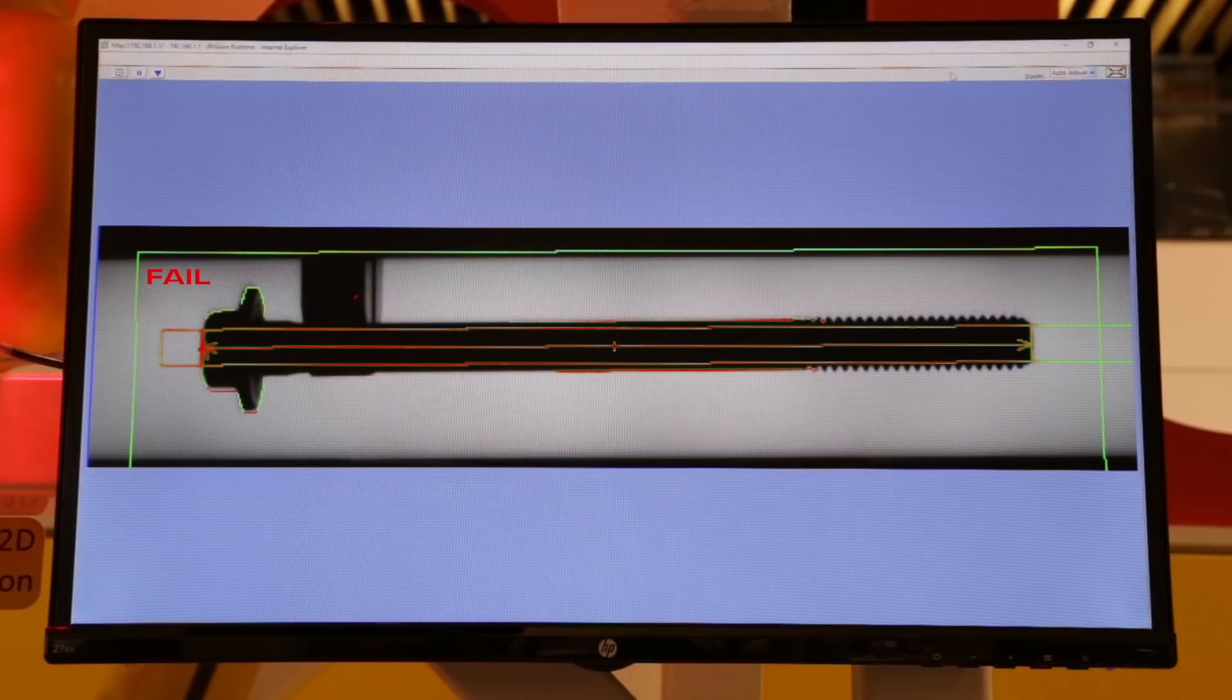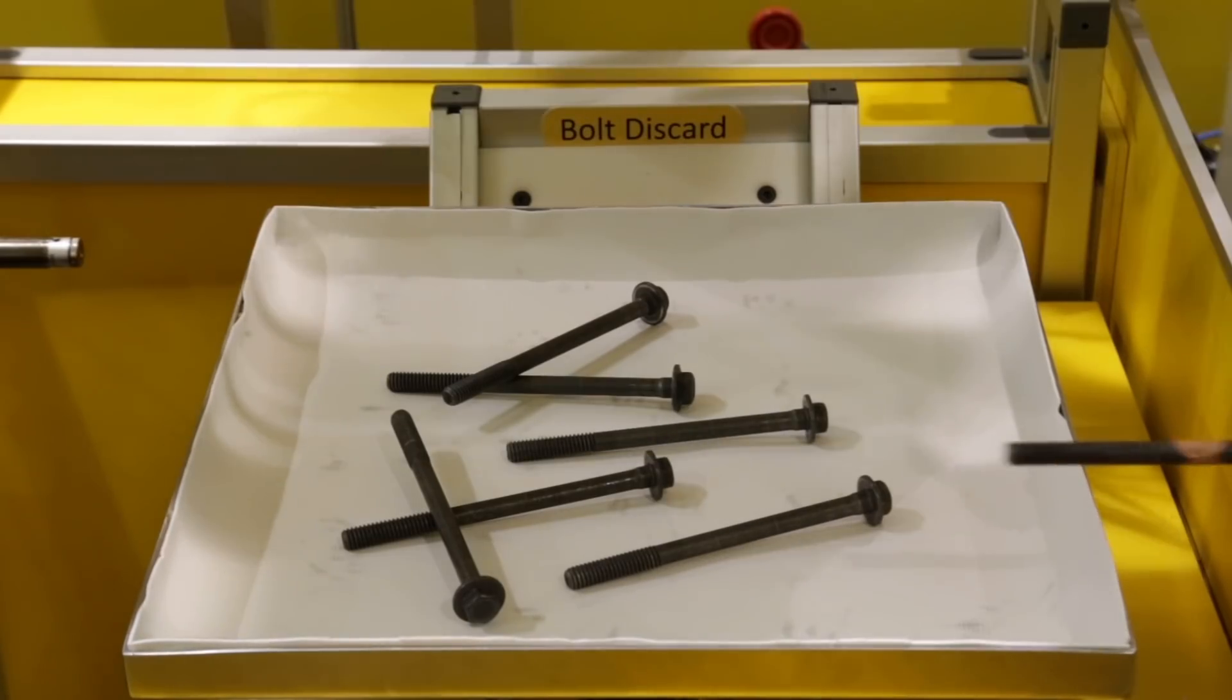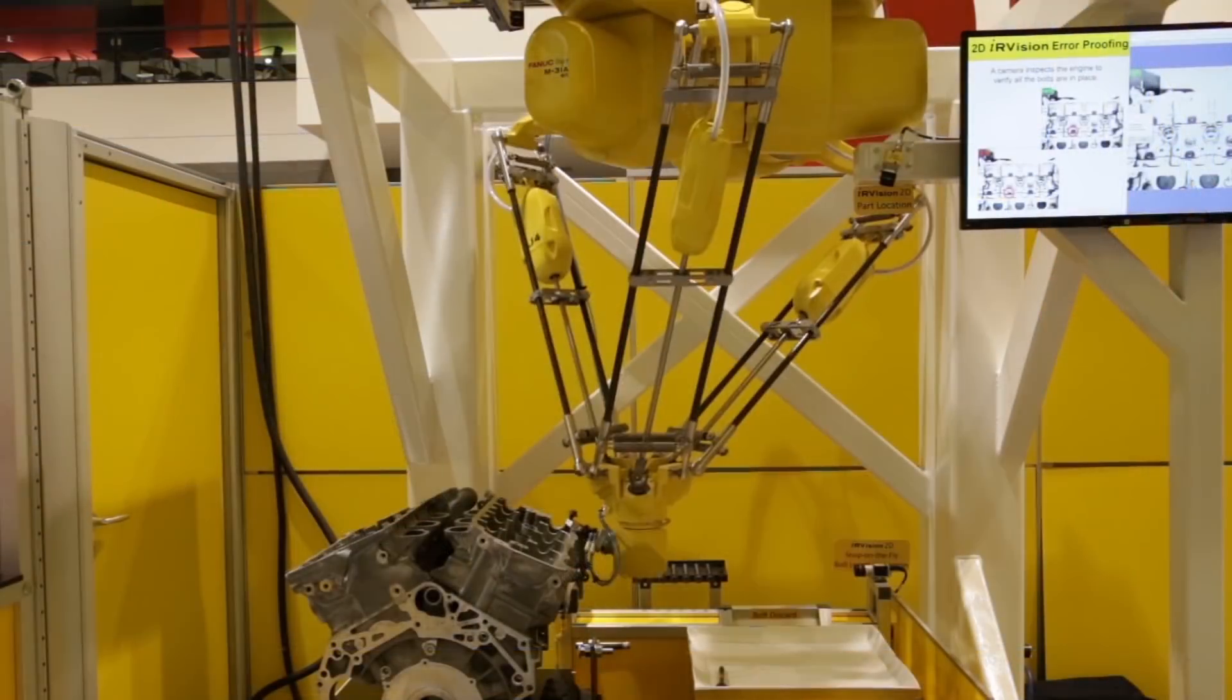Bolts that are not the correct length are taken to a reject bin. Once all bolts are located and racked, the robot picks and places each bolt into the casting.